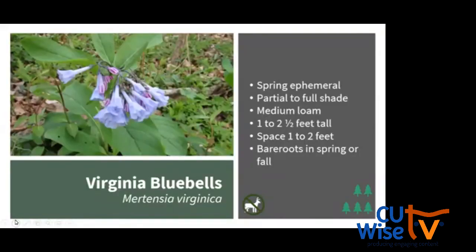First up is Virginia bluebells, a spring ephemeral that will spread over time to form colonies. It prefers partial to full shade but can be found in sunnier areas. It likes medium soil and can handle slightly wet conditions, and prefers loam. Plants get about 1 to 2 feet tall, and foliage dies off by mid-summer. Choosing bare roots is the way to go — plant in either spring or fall. It can do okay in clay, is generally deer resistant, and is visited by long-tongued bees.